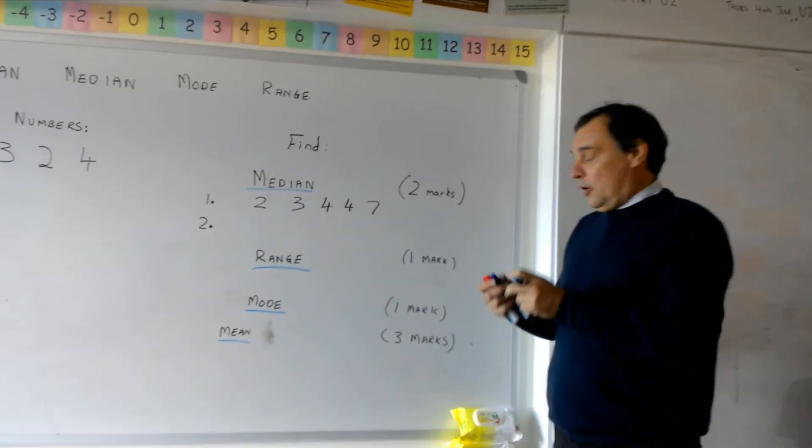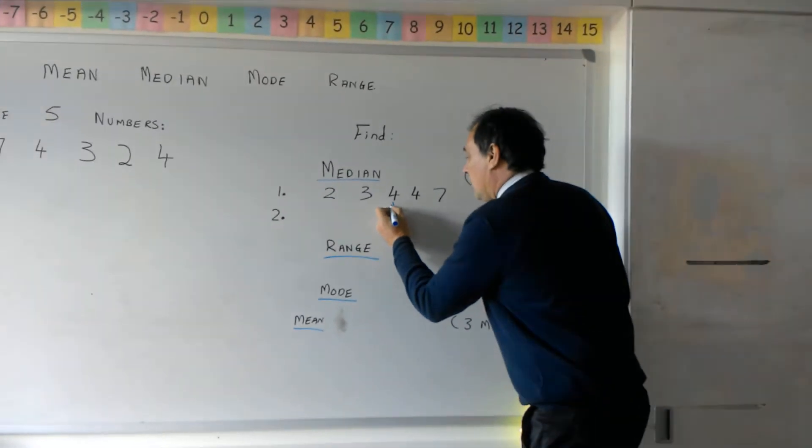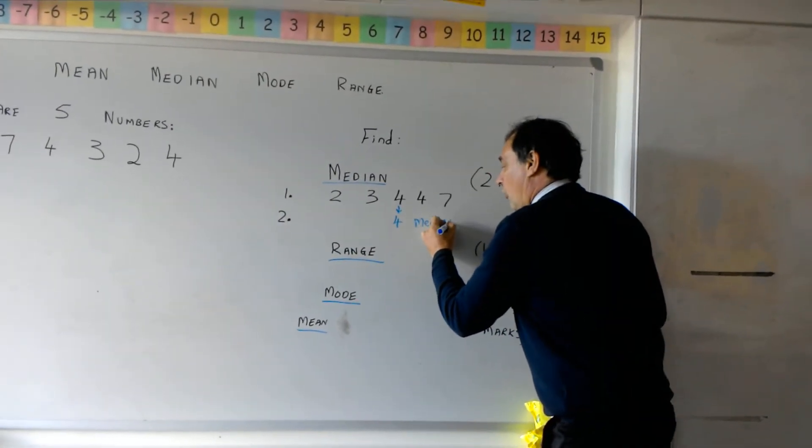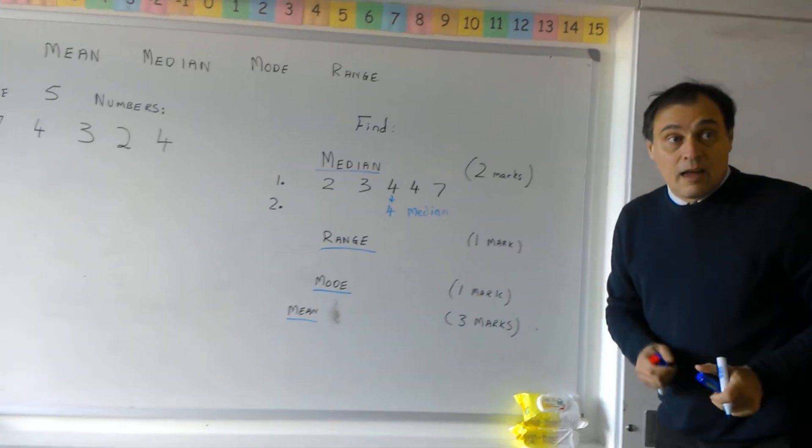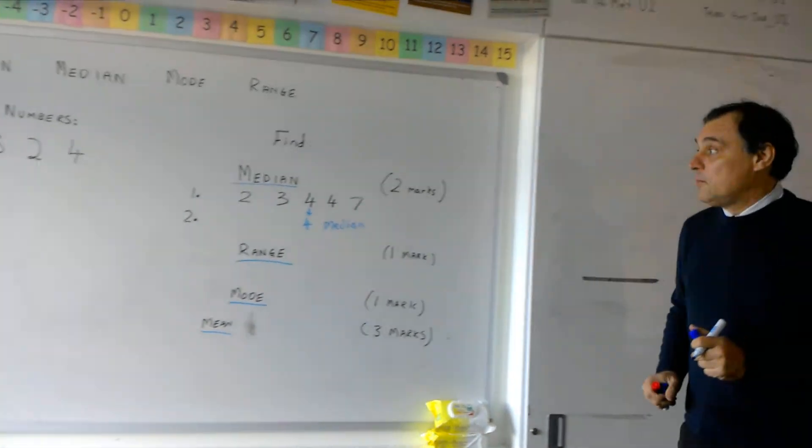Our second job is to pick the middle one out. So the middle one is that four. So our median is four. So once they are all in order. So there's your two marks. Two jobs, two marks.